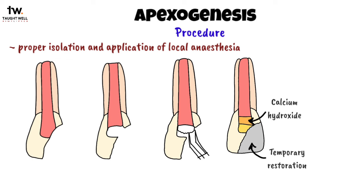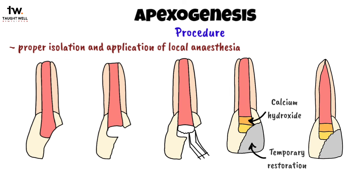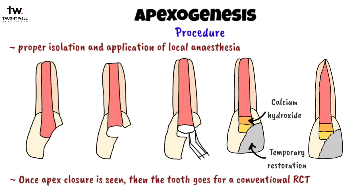After this, we place the calcium hydroxide dressing over the remaining pulp and give a temporary restoration. The patient is kept on follow-up to check for completion of root development and apex closure. Once apex closure is seen, then the tooth goes for a conventional RCT.